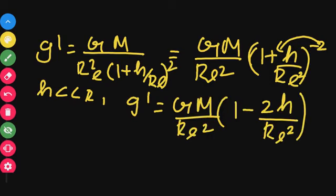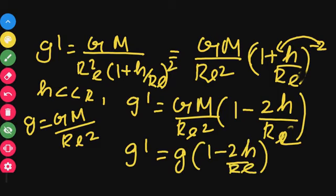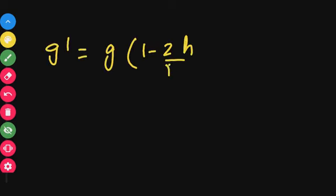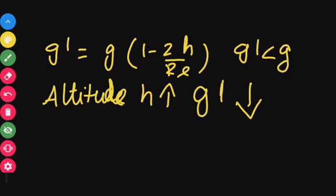Since g = GM/Re², we substitute to get: g' = g × (1 - 2H/Re). This is the variation of acceleration due to gravity with altitude. When altitude — that is, height — increases, the value of g' decreases. So g and altitude are inversely related.